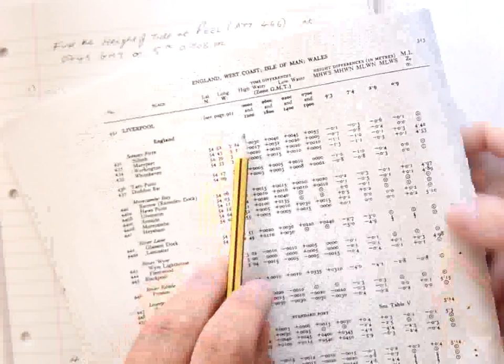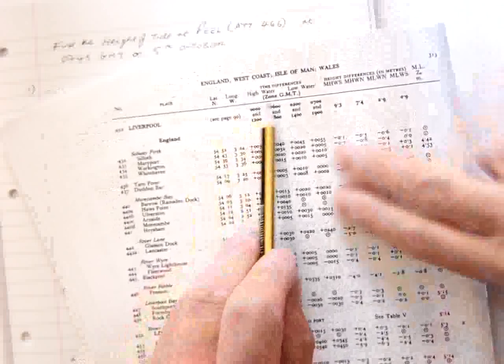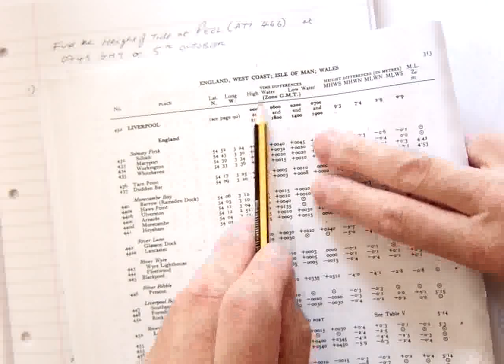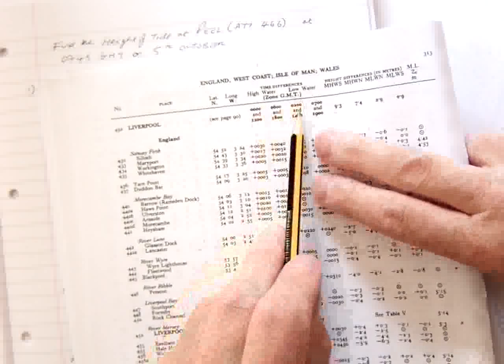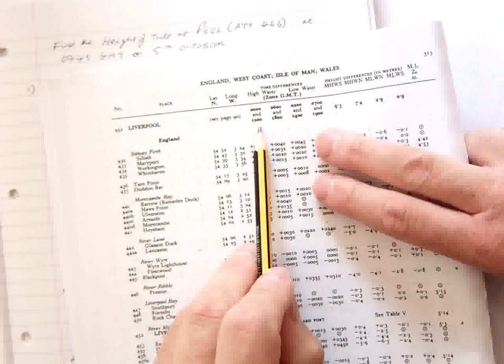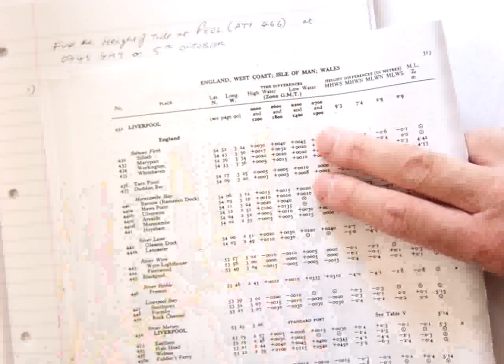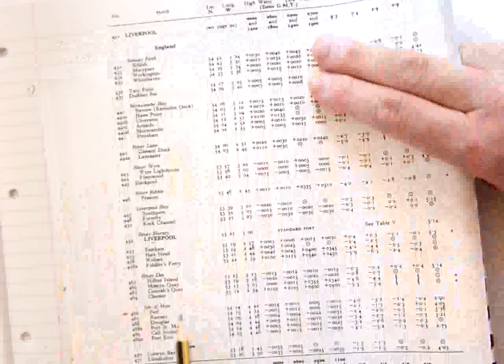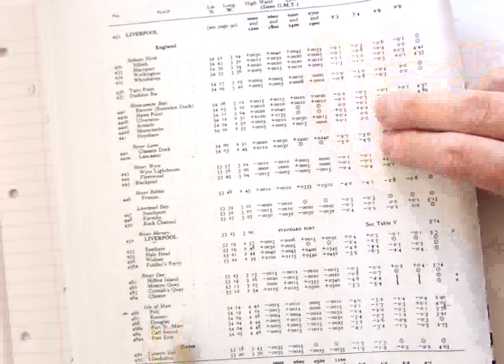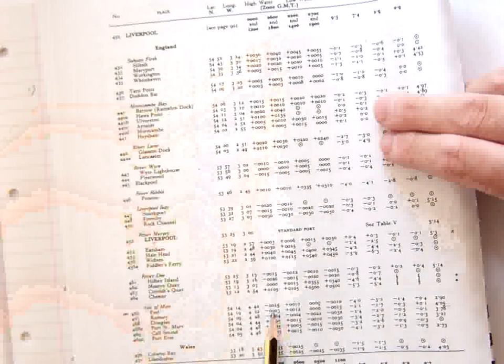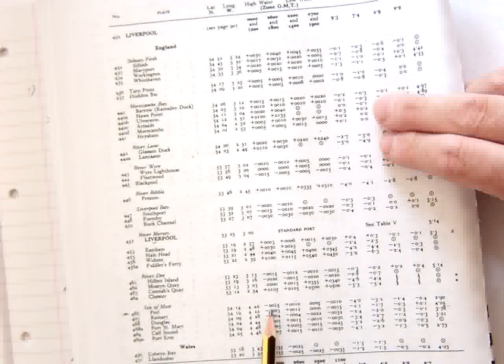We go to the top of the book here. And at Liverpool, you can see high water, low water, and then times underneath there. So if we go to Peel, we can see on the same column, we can see the calculation for the difference. And we've got 15 minutes, 10 minutes, 0 minutes, minus 10 minutes.